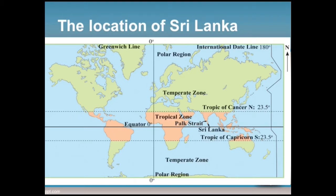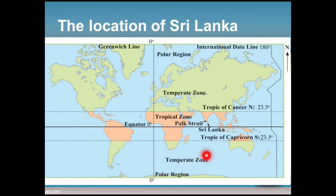Accordingly, Sri Lanka is located within the eastern longitudes in the northern hemisphere. The northern hemisphere is the upper part from the equator — this is the equator and this upper part is the northern hemisphere. Eastern longitudes belong to the right-hand side from the zero-degree longitude, and this is that right-hand side.